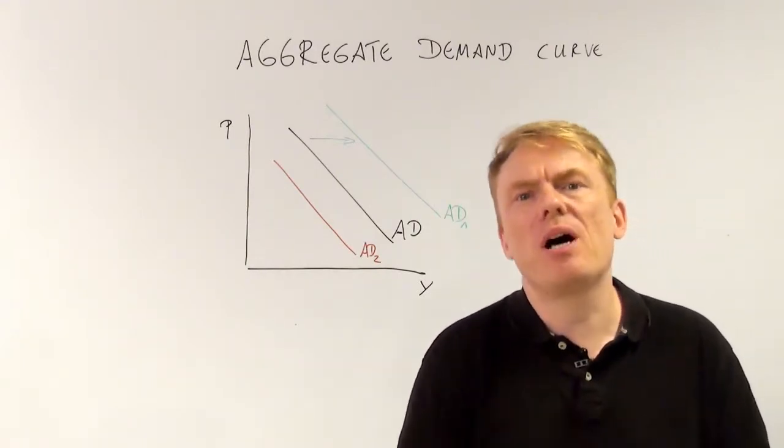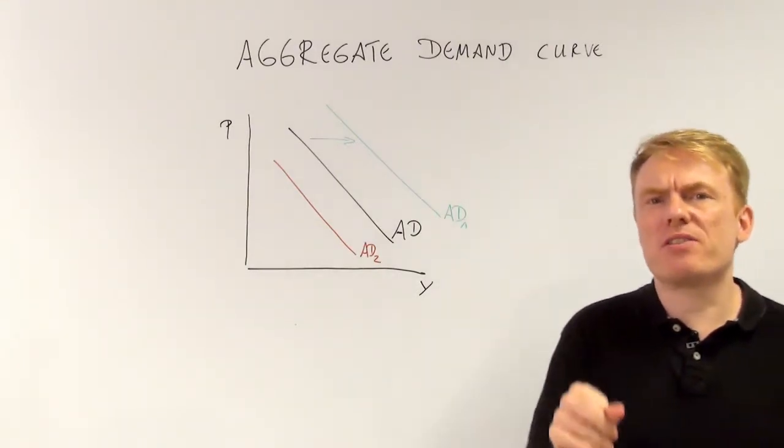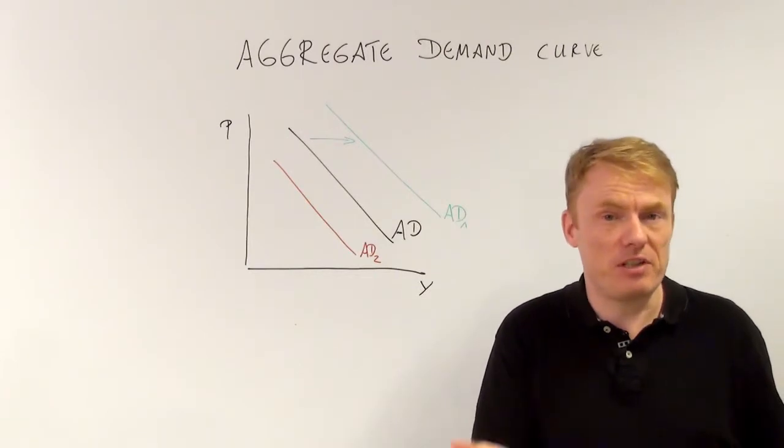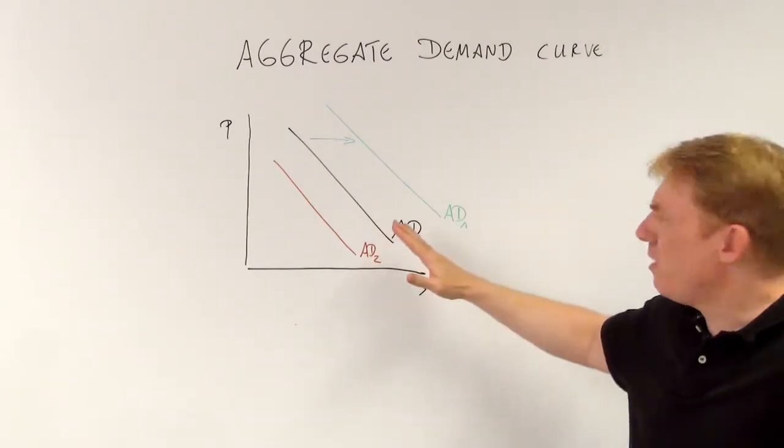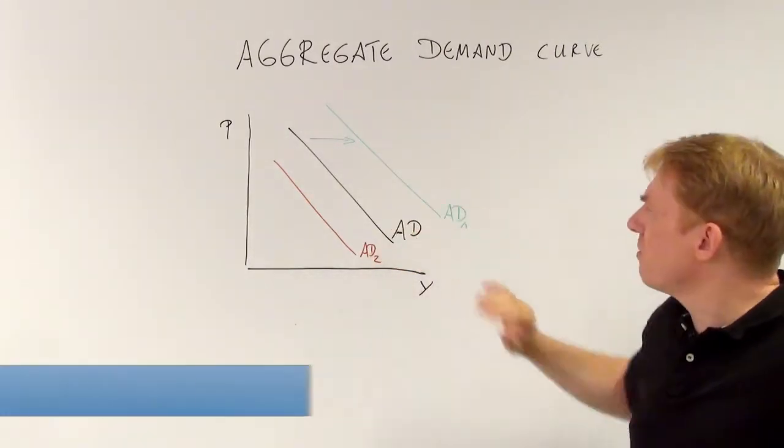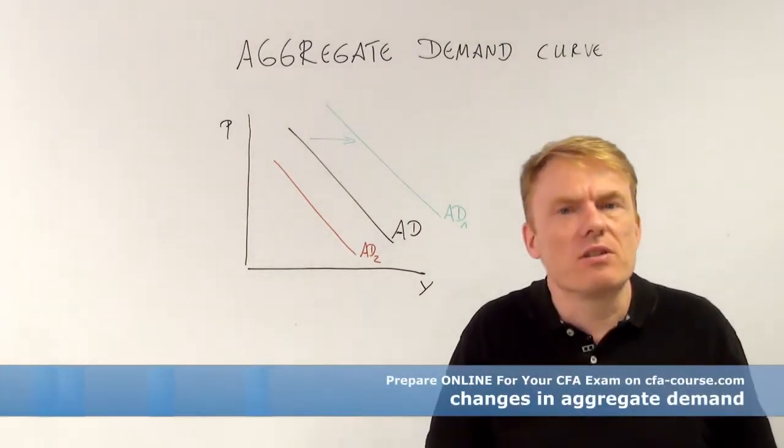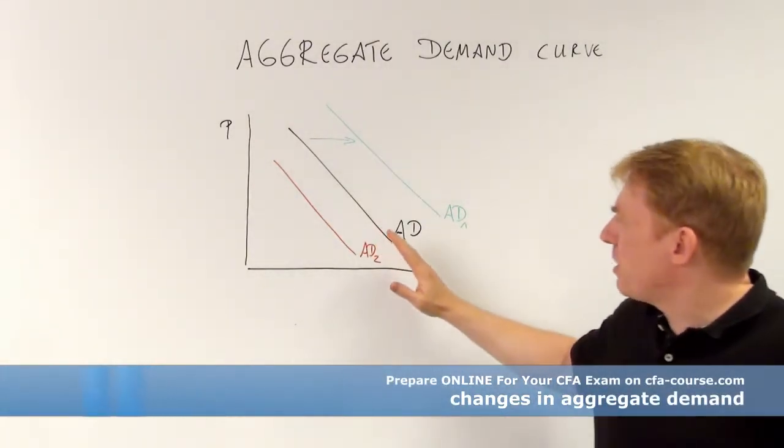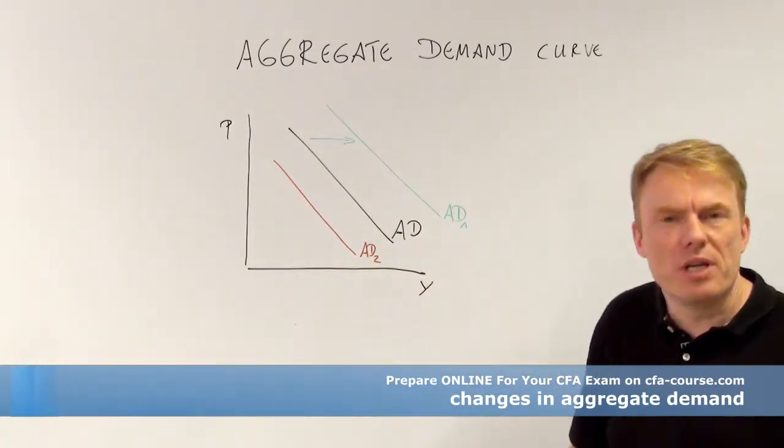First, there is fiscal policy. If fiscal policy increases government expenditure, then the aggregate demand curve goes to the right. If it decreases government expenditure, of course the aggregate demand curve would go to the left.